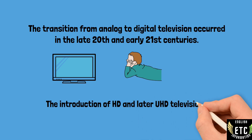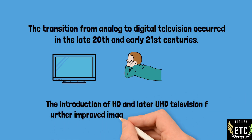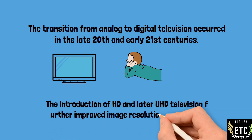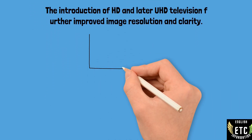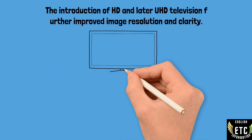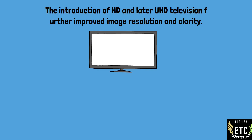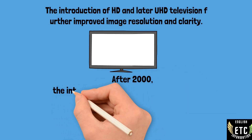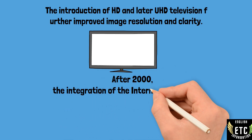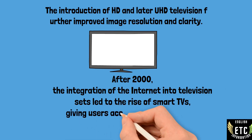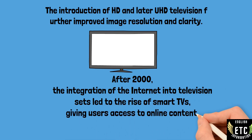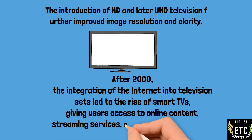Today is the era of high definition (HD) and ultra high definition (UHD) television. The introduction of HD and later UHD television further improved image resolution and clarity. After 2000, the integration of the internet into television sets led to the rise of smart TVs, giving users access to online content, streaming services, and interactive features.